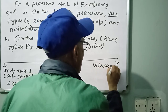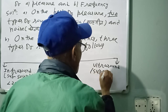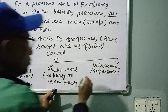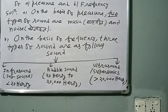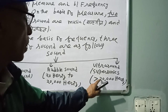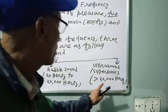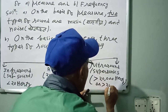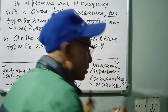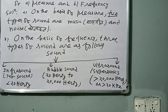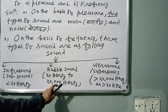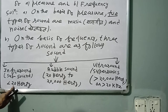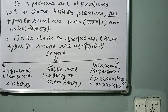Third, ultrasound — also called supersonics — is the sound whose frequency is above 20,000 hertz or 20 kilohertz. So on the basis of frequency: infrasound is below 20 Hz, audible sound is 20 Hz to 20,000 Hz, and ultrasound is above 20,000 Hz.